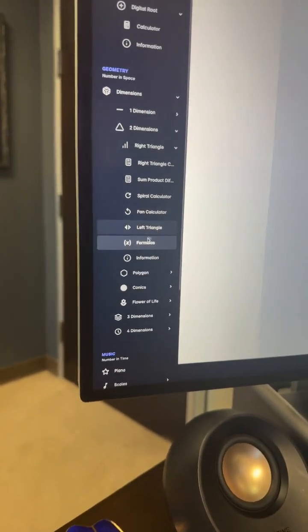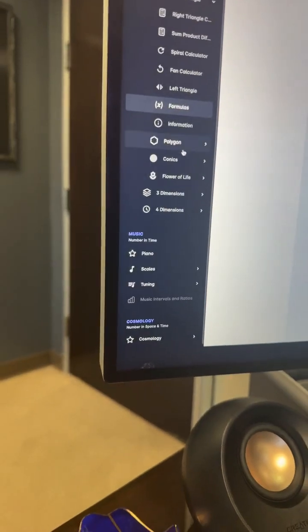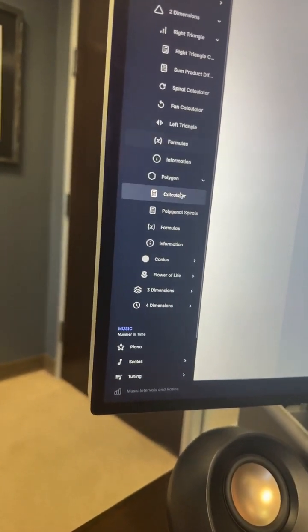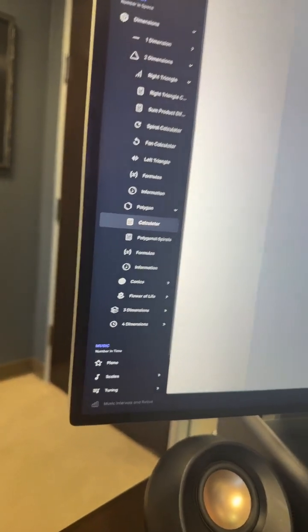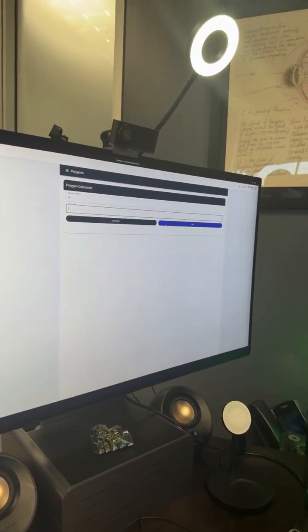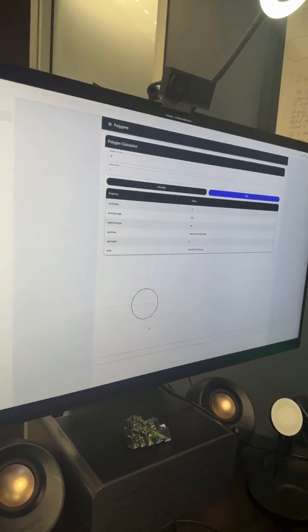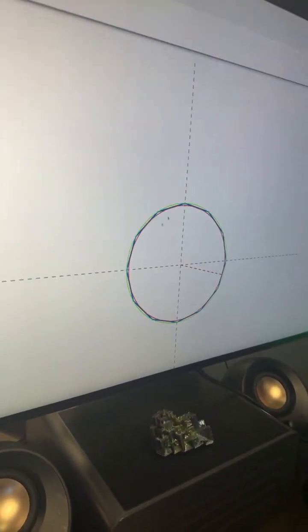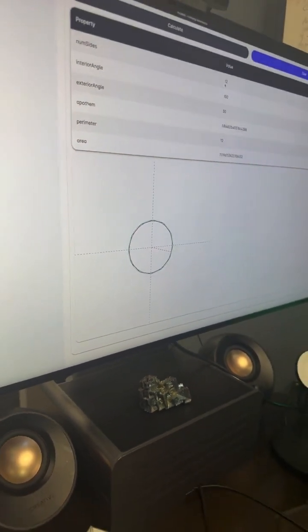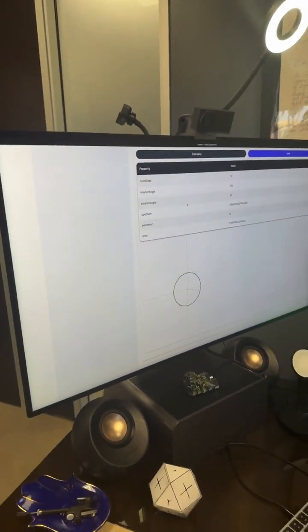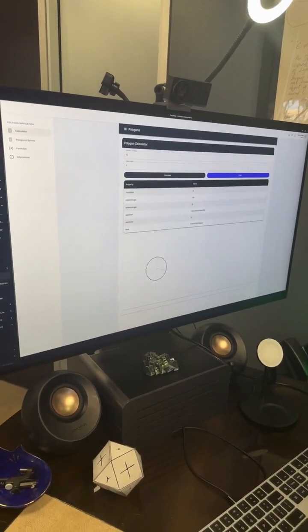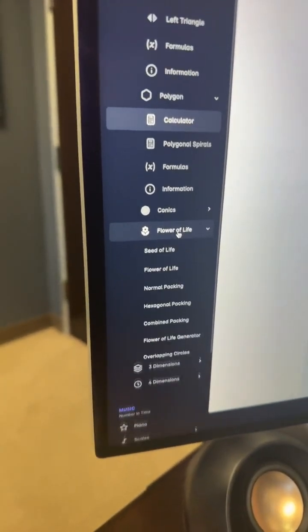We also have, in addition to that, you can make polygons. So we can make a polygon calculator and calculate the number of sides. So let's say we want to see a 12-sided. And we have one for each value side. And so this is basically giving us the polygon that would be related to that 12-sided. And it's going to give us the number of sides, the interior angle, the exterior angle, the apothem as well.